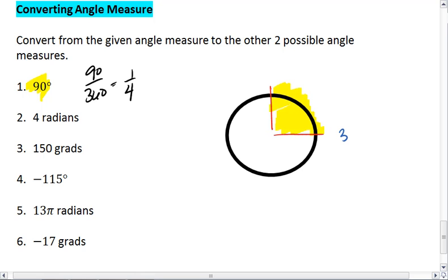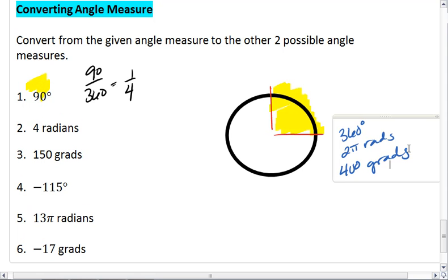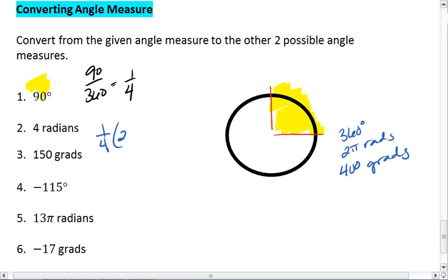So I know there's a total of 360 degrees, or 2π radians, or 400 grads in a full circle. If I have one fourth of a circle, this means I have one fourth of the possible 2π radians, or π over 2 radians.